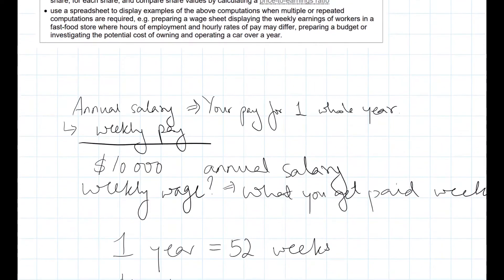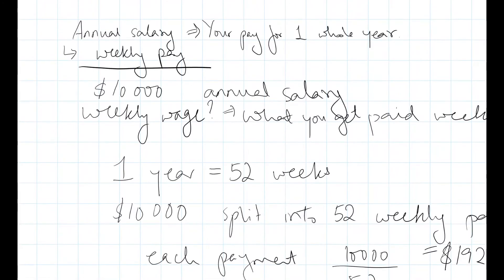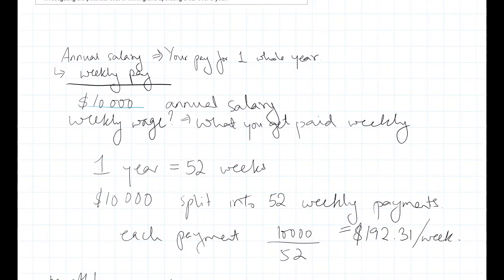So your Annual Salary is what you get paid for one whole year. So say for example your Annual Salary is $10,000 and you want to calculate your Weekly Wage from that. So your Weekly Wage is what you get paid weekly and one year is made up of 52 weeks.